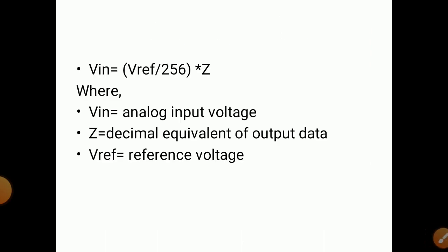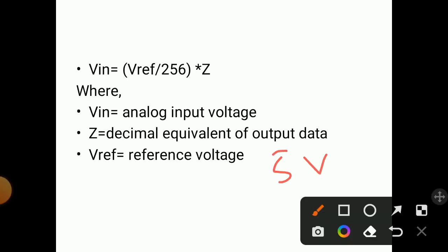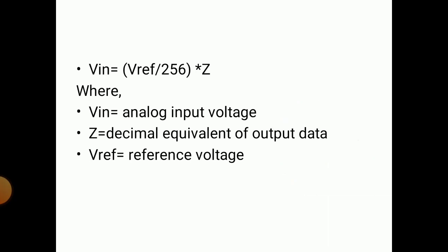V input is also calculated with the help of this formula: V input = (V_reference / 256) × Z, where V input is the analog input voltage, Z is the decimal equivalent of the output data, and V reference is the reference voltage, which we have selected as 5 volts. So like this we can calculate the V input voltage.